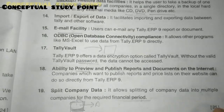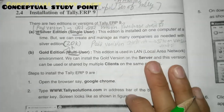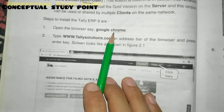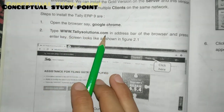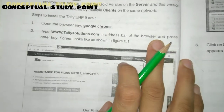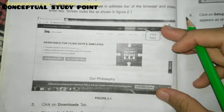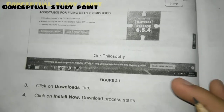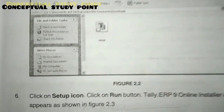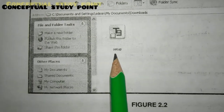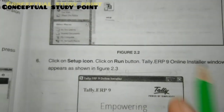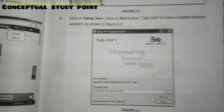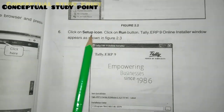Now let's look at how to install Tally ERP9. Open Google Chrome and go to www.tallysolutions.com. Press Enter and you will see the Tally logo on the screen. Click on the Download tab, then click 'Install Now'. You will find the setup file in your drive — click the icon to begin setup.